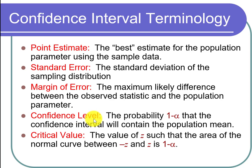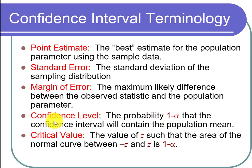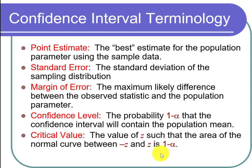The confidence level — often written 1 minus alpha — is the probability that the confidence interval will contain the population mean. How likely it is that you're within the margin of error has a lot to do with this confidence level. Finally, the critical value is the value of z such that the area of the normal curve between negative z and z is 1 minus alpha. We'll look at that in a picture shortly.